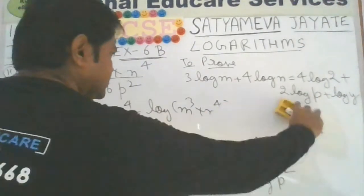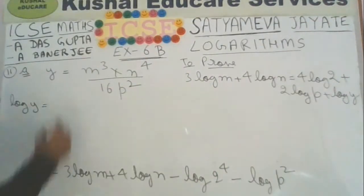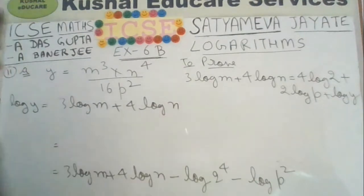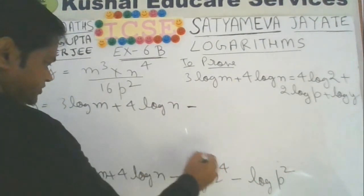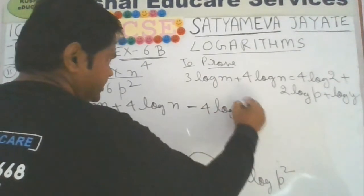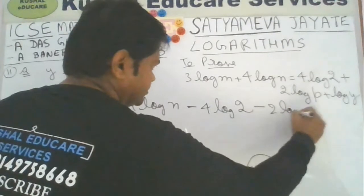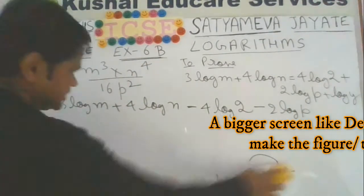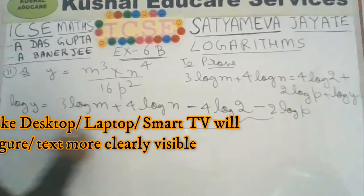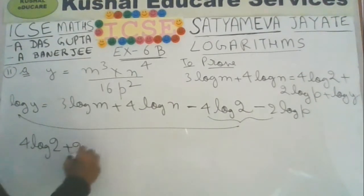We have simplified so far. Now we get 3 times log m plus 4 times log n, minus — for log 16, since 16 is 2 to the power 4, this 4 comes in front giving minus 4 times log 2. Similarly, the 2 from p squared comes in front: minus 2 times log p. Now transfer both terms from right to left: 4 times log 2 plus 2 times log p.